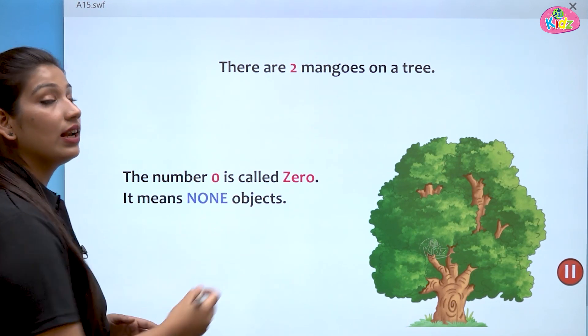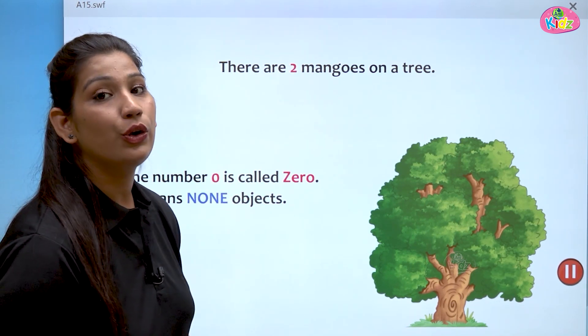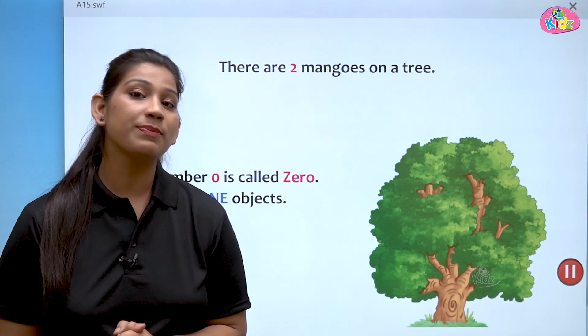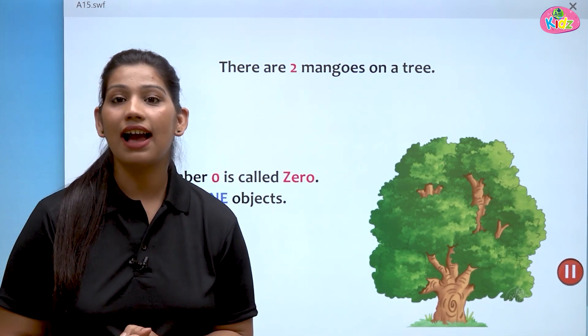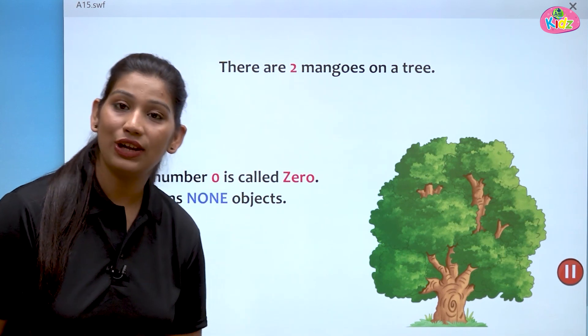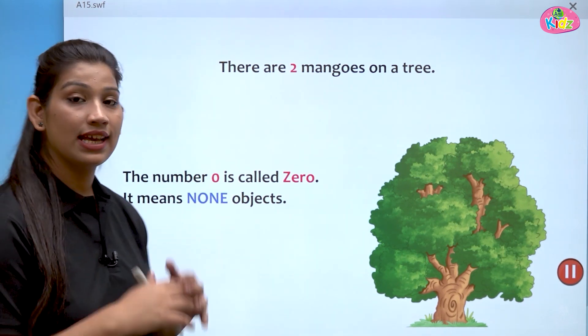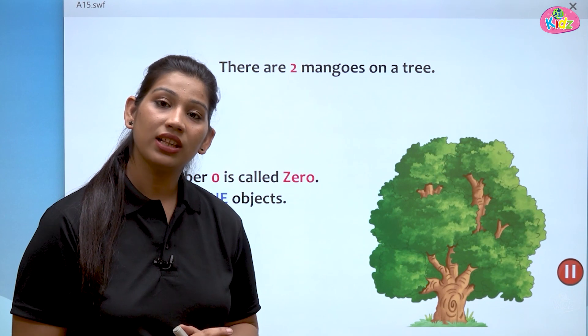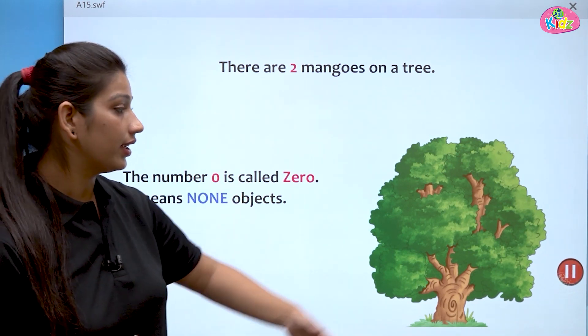The number zero is called Z-E-R-O, zero. Zero ki spelling hoti hai Z-E-R-O, zero. Zero means no objects. Zero maklab hota hai kuch bhi nahi. Koi bhi object nahi hai.